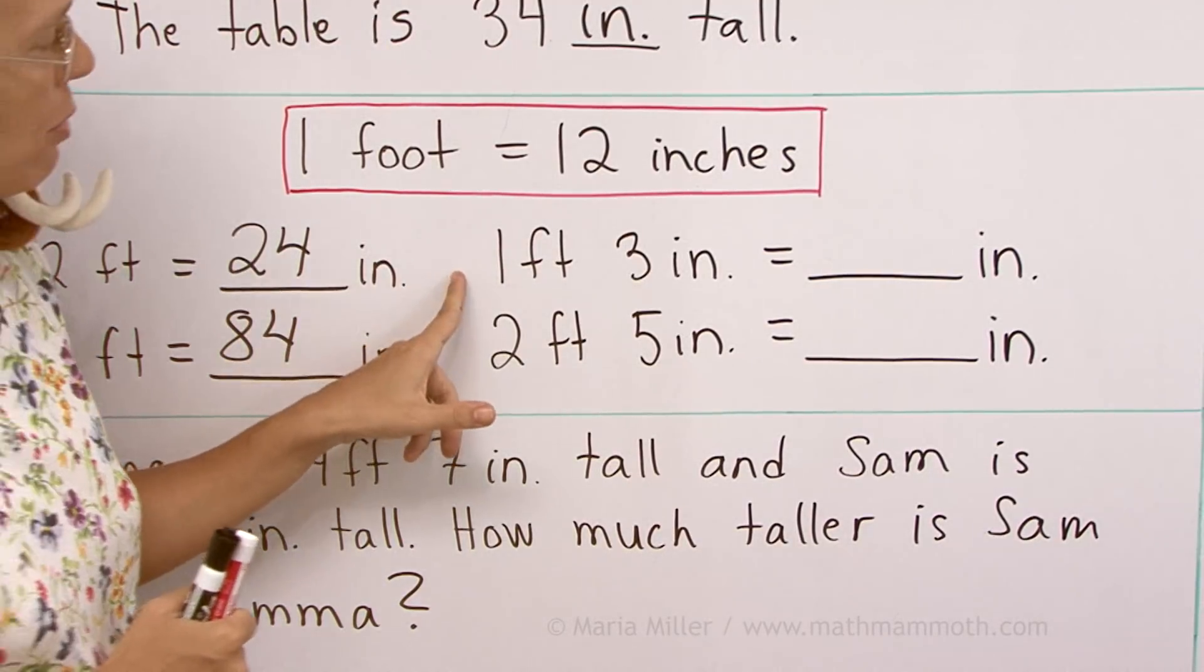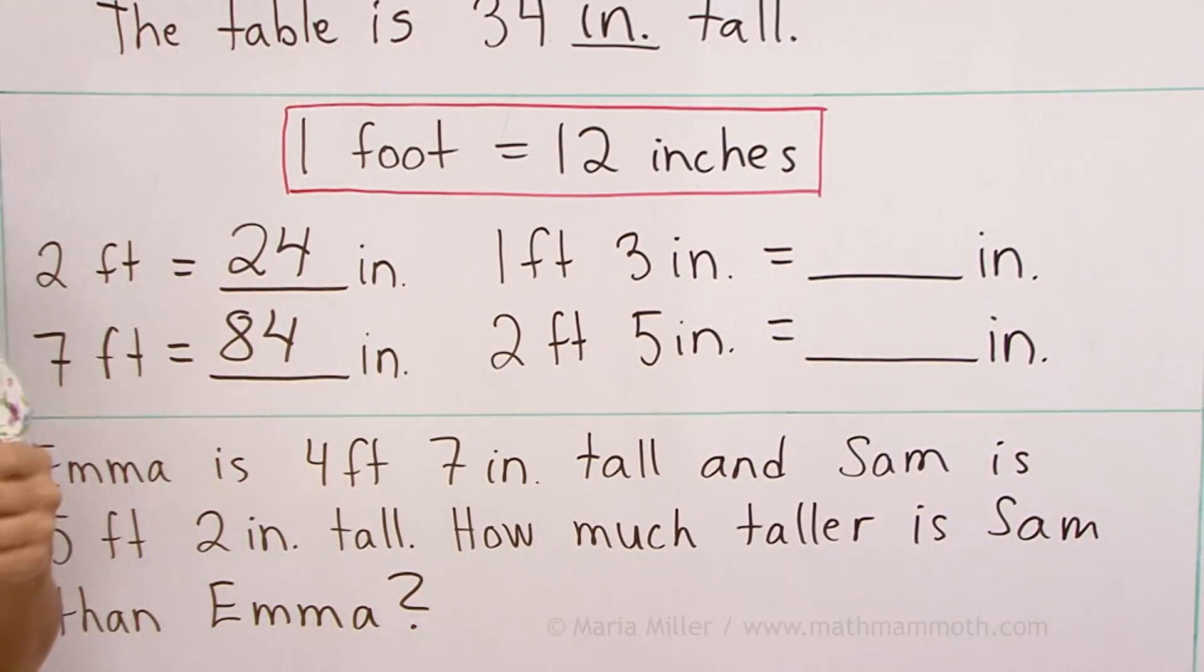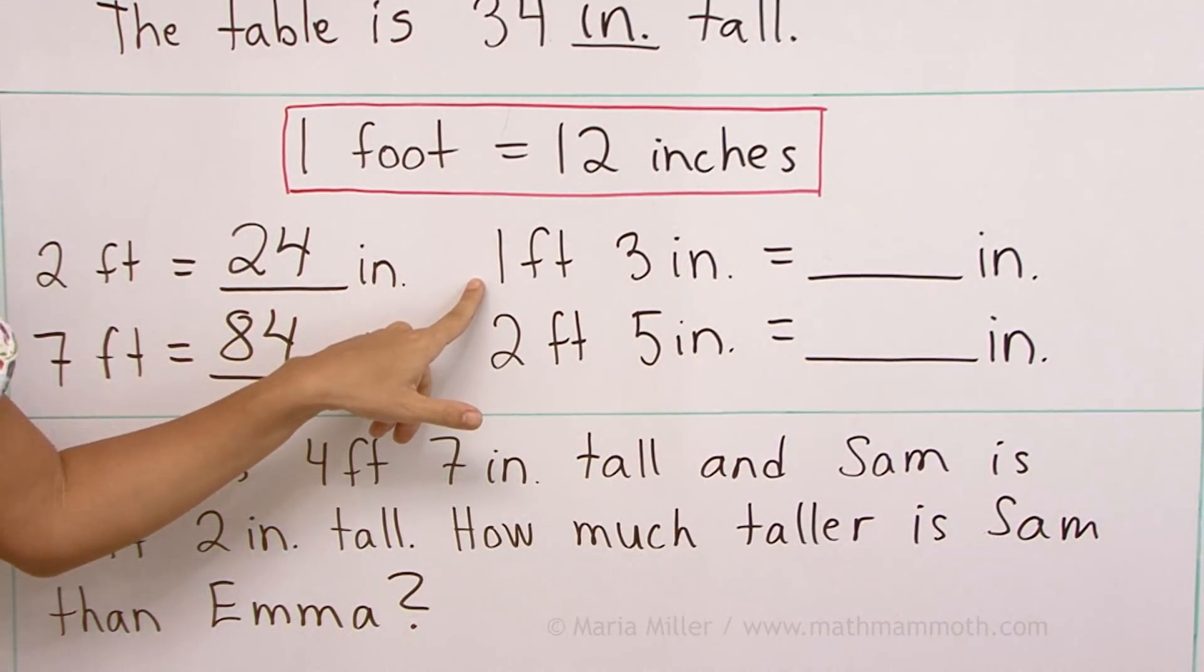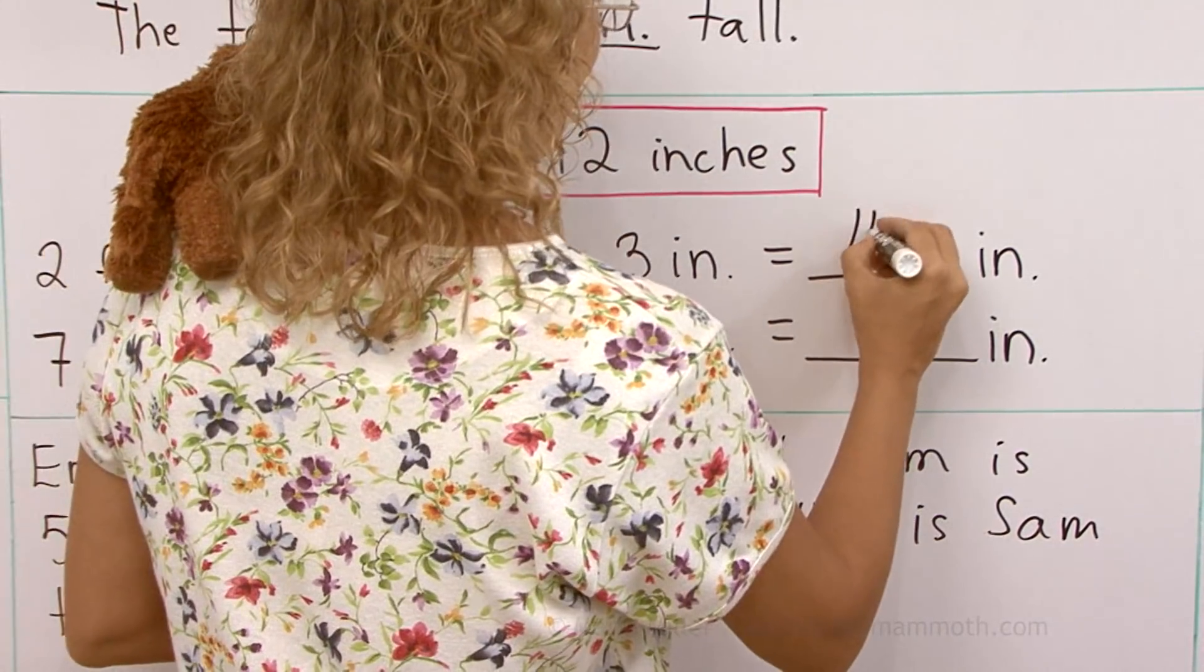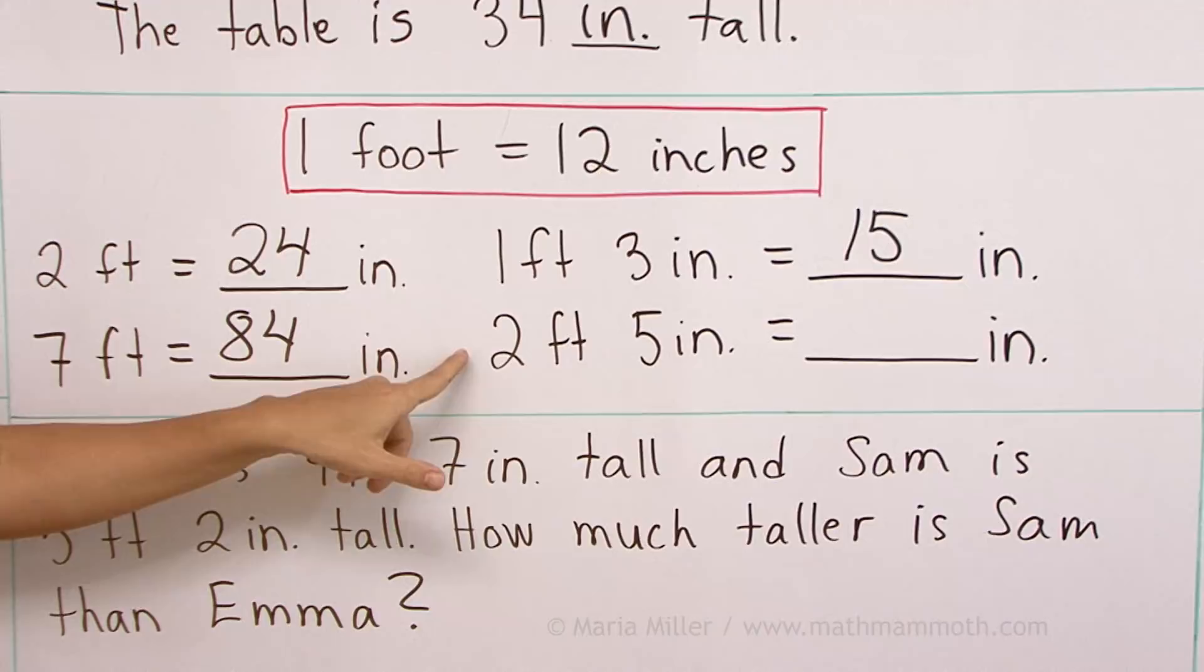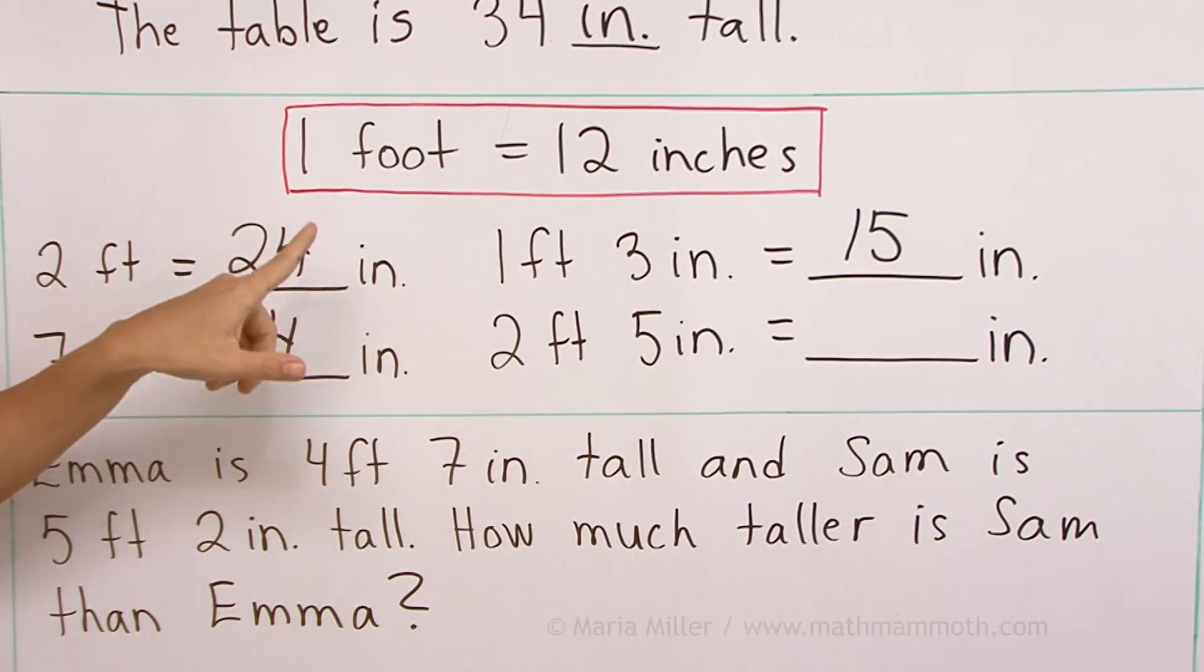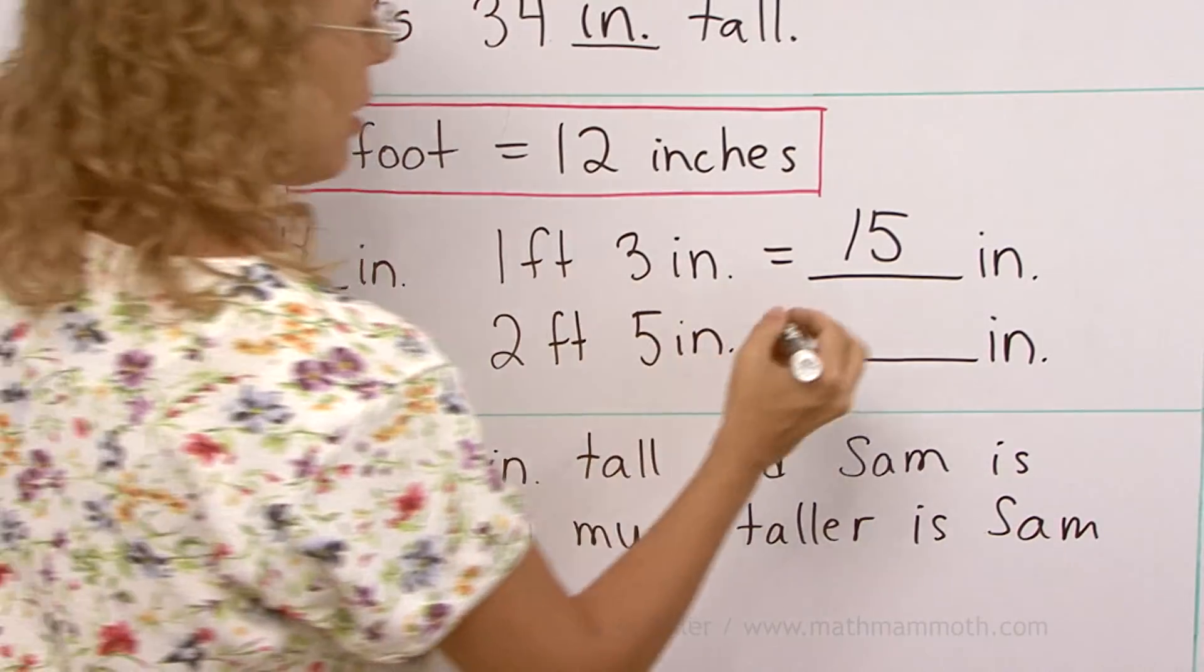How about one foot, three inches into inches? Not difficult because one foot is 12 inches. So I have here 12 plus three inches. 15 inches. And then lastly, two feet, five inches. Two feet equals 24 inches and then five inches more than that. 29 inches.